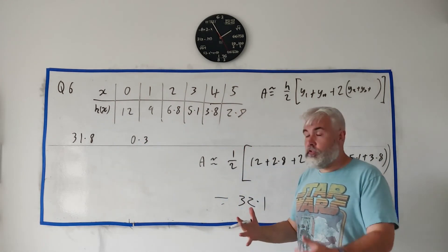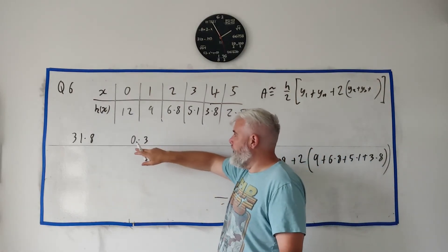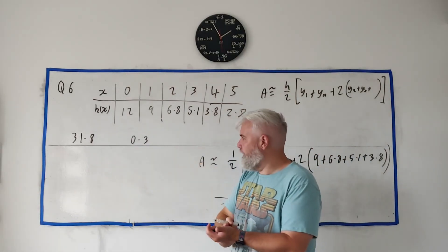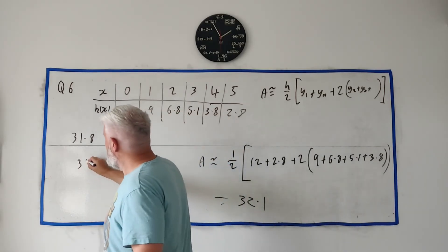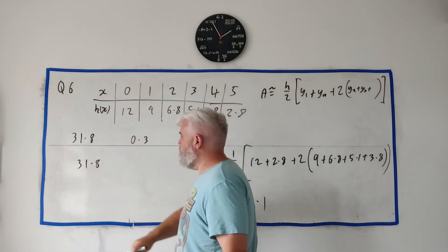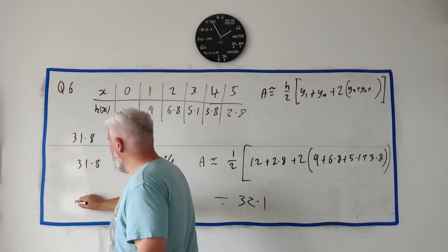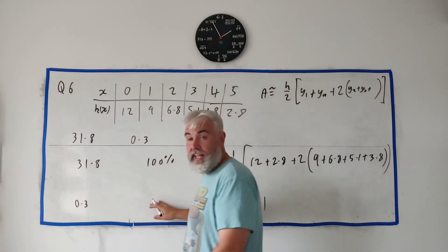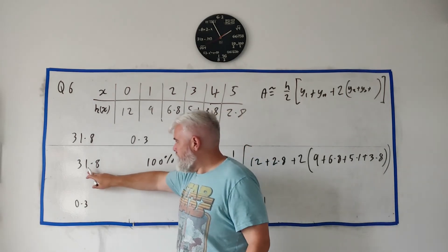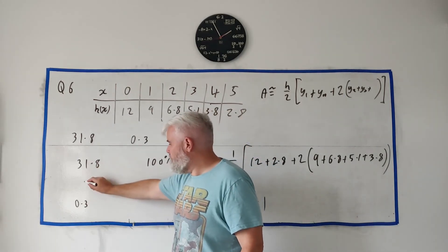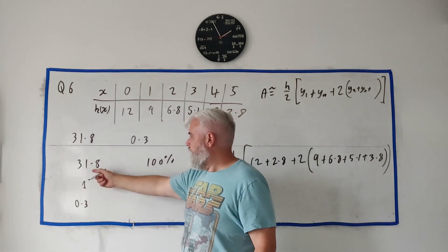Then I try and work out what percentage. This is, again, very quick in a calculator. Let me do it really slowly. I always say something like 31.8 is a hundred percent. What we're looking for is what is 0.3, what percentage is that? It's easy to get from one number to another, just always go through one.